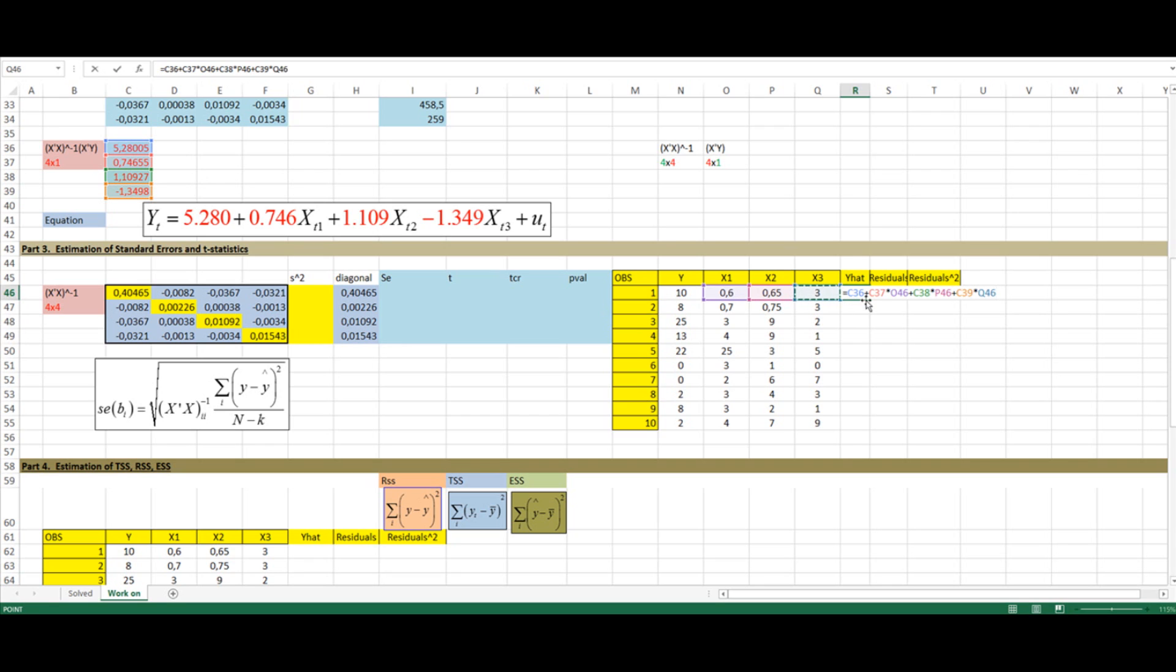The next coefficient is 1.10 times x2 plus minus 1.34 times x3. Now, since I want to copy paste this all the way down, I'm going to need to lock the cells that are giving me the coefficients. So I'm going to press F4 on C36, C37, C38, and C39. And now I'm ready to copy paste this information all the way down.